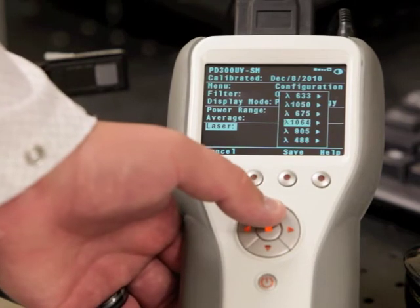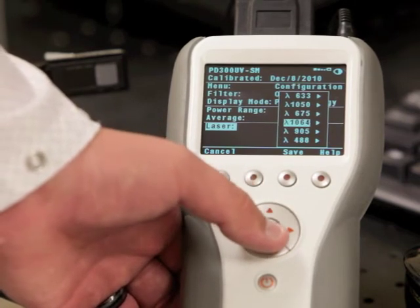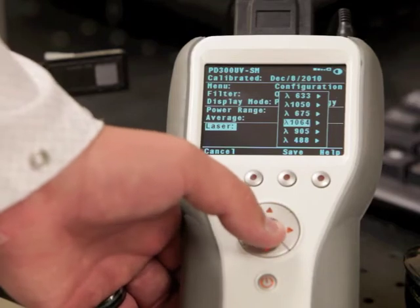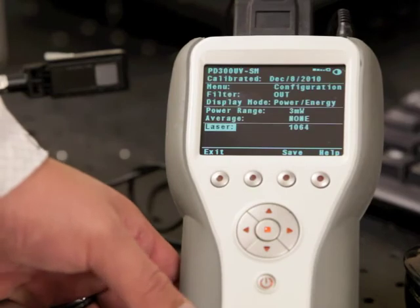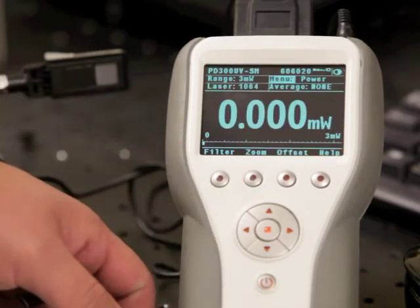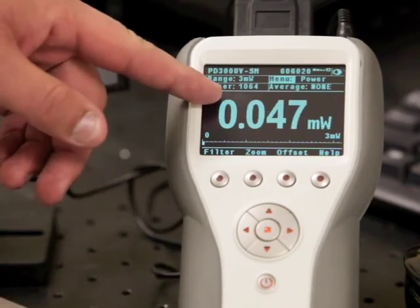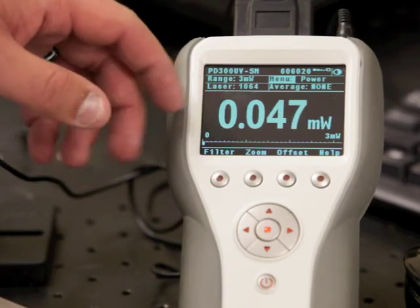Let's say I select 1064 as my default wavelength to start up with. I select 1064, press save, and then exit. You can see it's brought 1064 as my wavelength I'm using now.